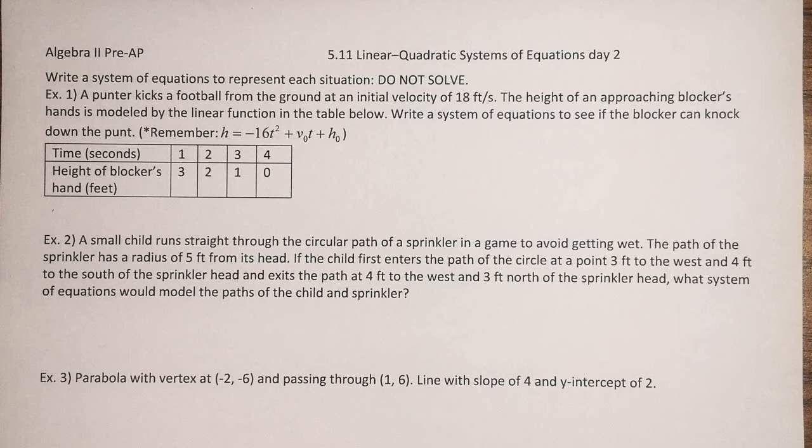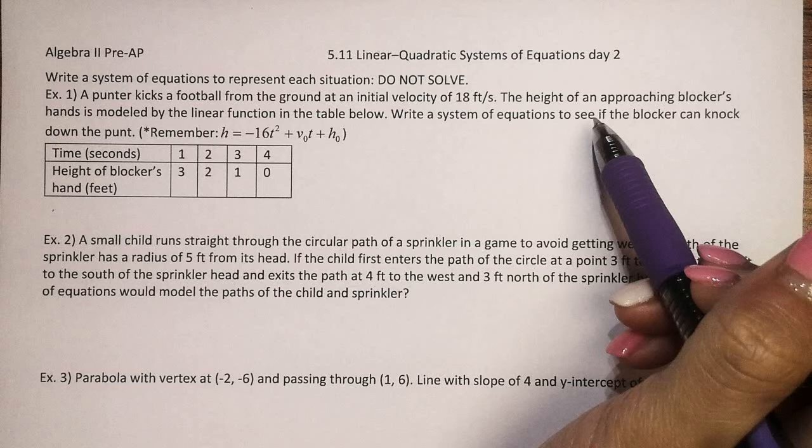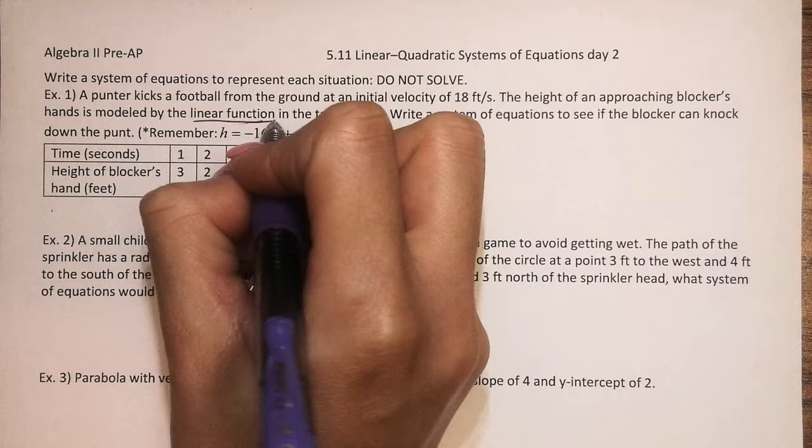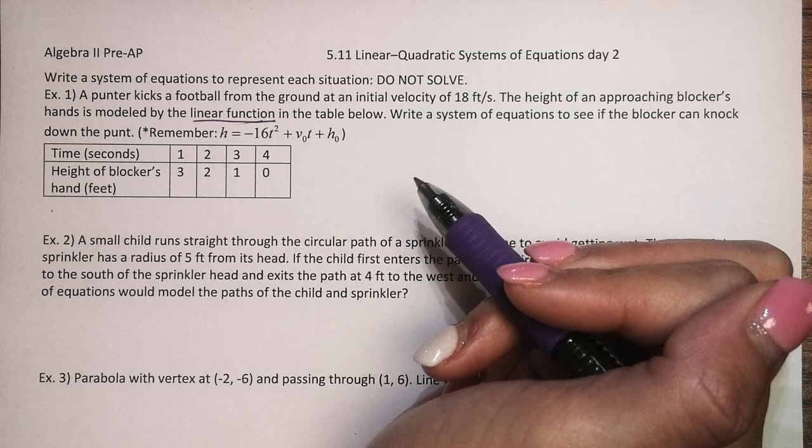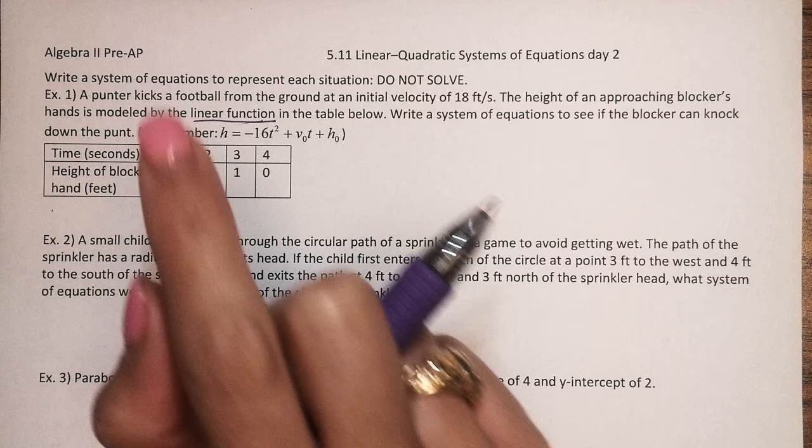A punter kicks a football from the ground at an initial velocity of 18 feet per second. The height of an approaching blocker's hand is modeled by a linear function. In the table below, write a system of equations to see if the blocker can knock down the punt. Alright, so let's start with the punter, the football.